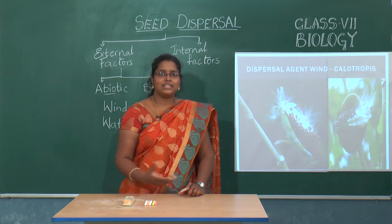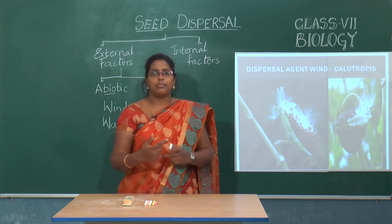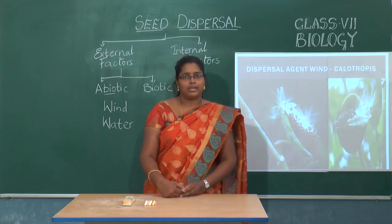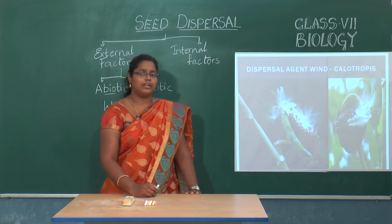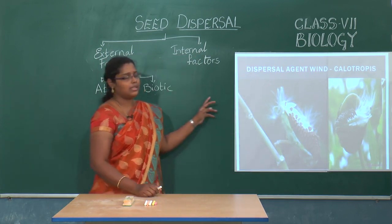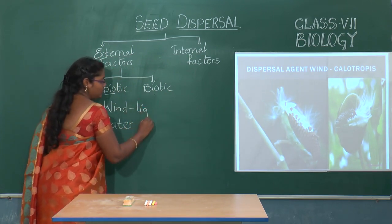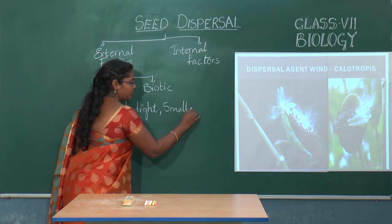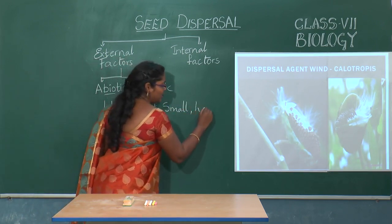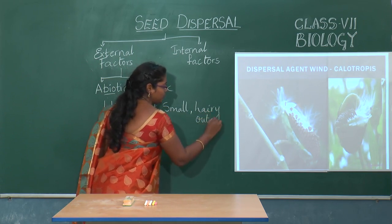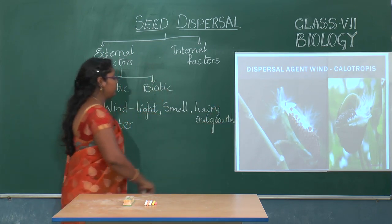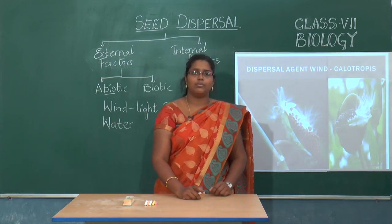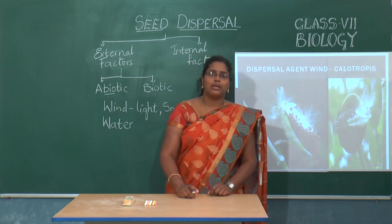Seeds can be carried away by the wind and move far from the parent plant. The characteristics of seeds that disperse through wind dispersal are: they will be light in weight, small in size, and they will have a hairy outgrowth.